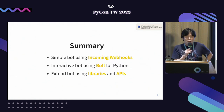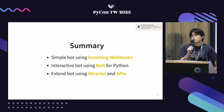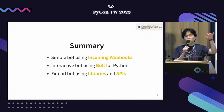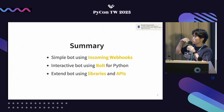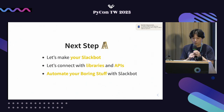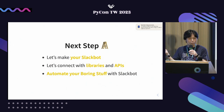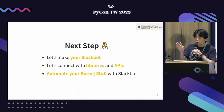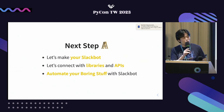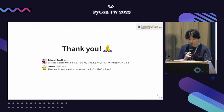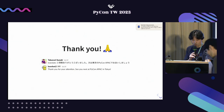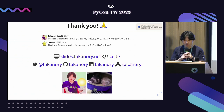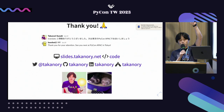Summary of this talk: you now know the simple bot using incoming webhooks, the interactive bot using Bolt for Python, and the extended bot using Python libraries and APIs. Next step: let's make your Slack bot, connect with libraries and APIs, and automate your boring stuff. Then you will have more free time to do other creative things. Thank you for your attention. I look forward to seeing you at PyCon APAC in Tokyo, Japan.